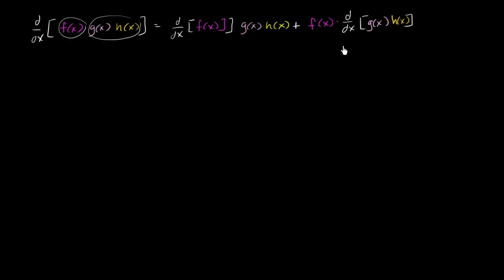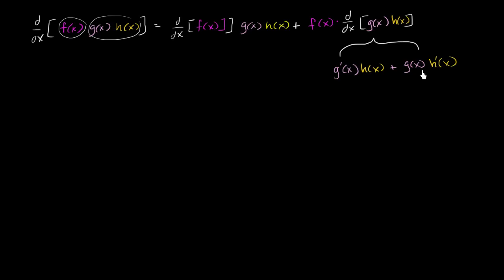We can apply the product rule again, just focusing on this part right over here. The derivative of g of x times h of x is just going to be g prime of x times h of x, plus g of x times the derivative of h, times h prime of x. So the derivative of g of x times h of x is this stuff right over here, and we're going to multiply that times f of x.